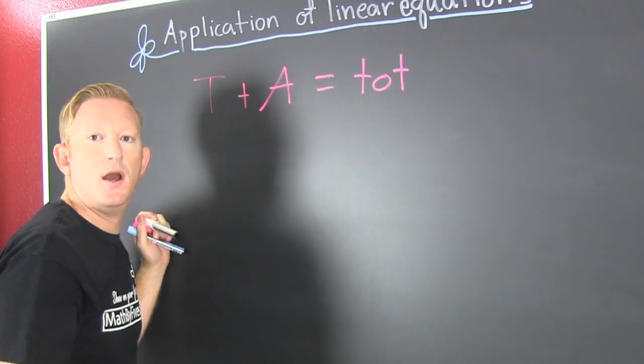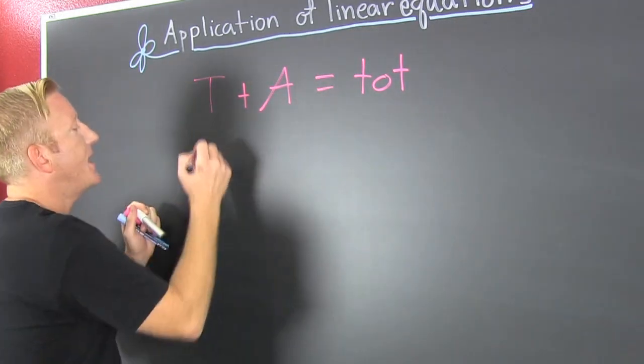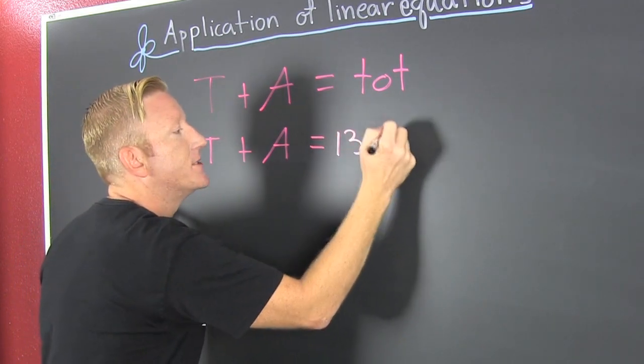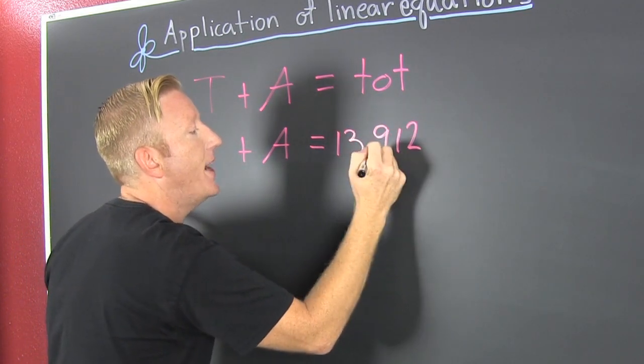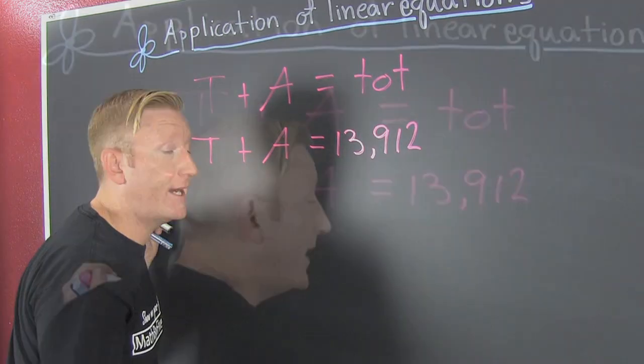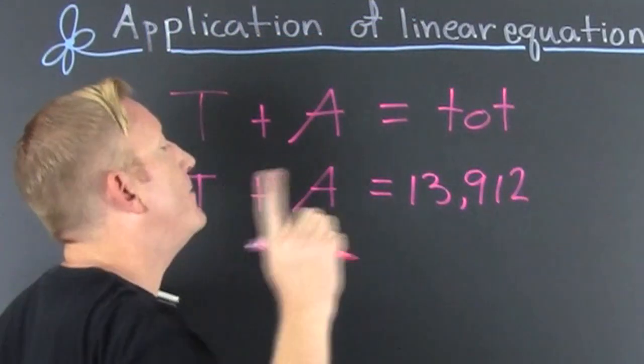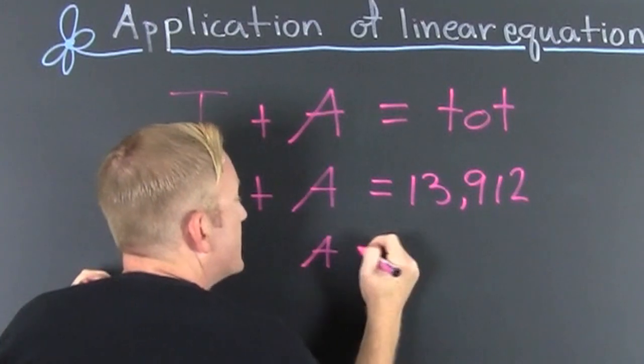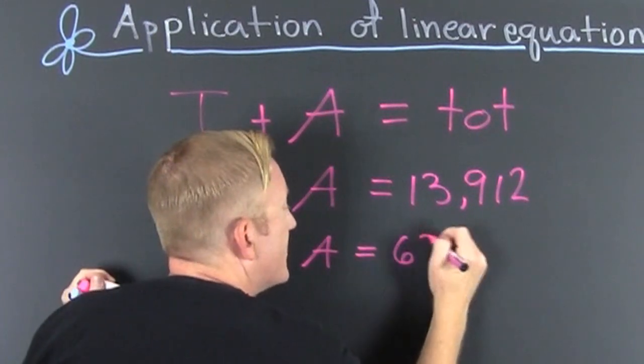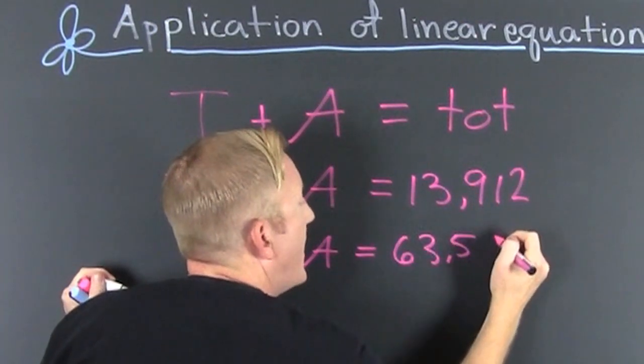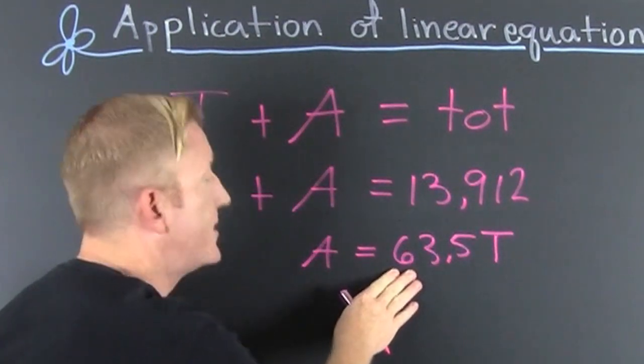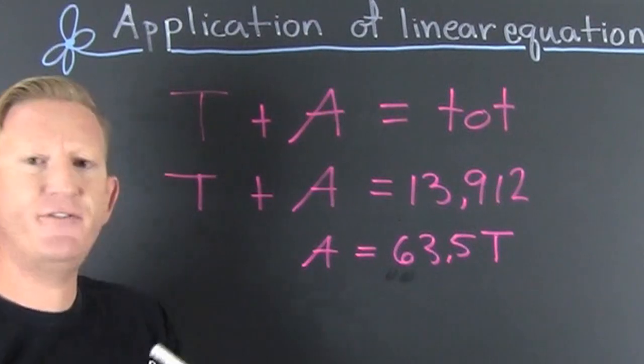Taffy plus apples is going to be 13,912 pounds when we put the weights together. Let me get this straight: we also have that apples equals 63.5 times the taffy. Now let's go more into this. Which one's bigger, the taffy or the apples?